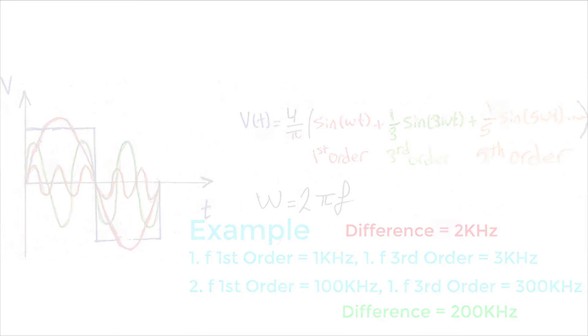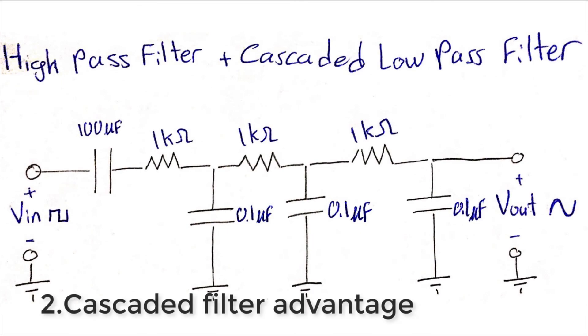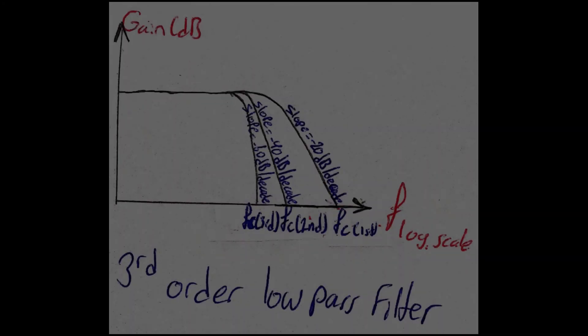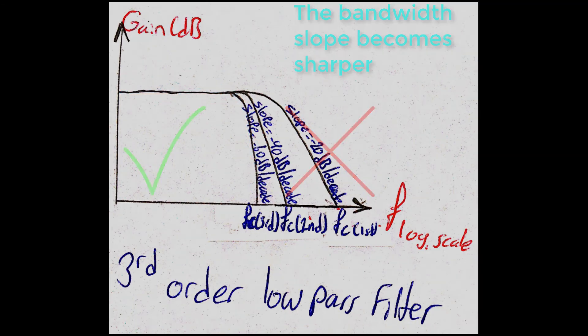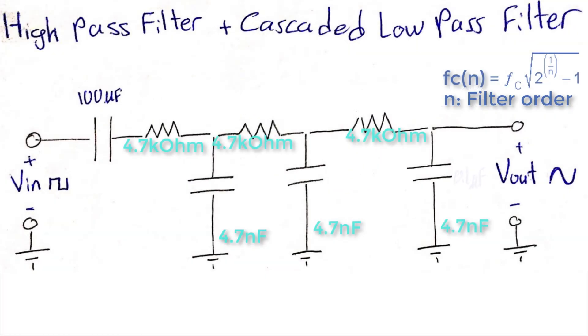So what's the reason behind using cascaded low-pass filter then? The advantage of using cascaded filter is that it makes it more accurate when selecting a specific frequency. That's why it was possible to select the first-order harmonic only and reject the other harmonics, so we could obtain a sine wave shape. When it comes to cascaded filters, calculating the cutoff frequency is different, and it's done by using this formula.